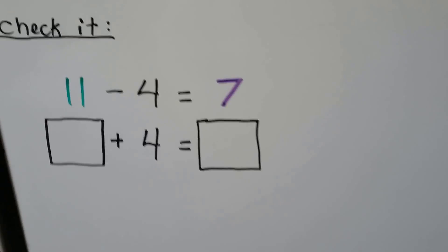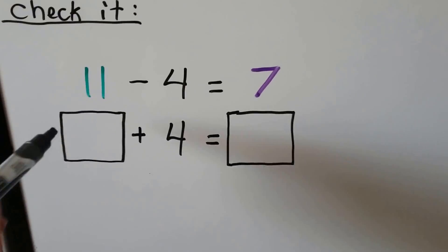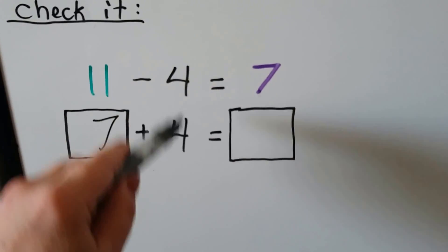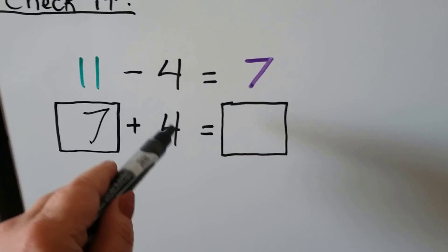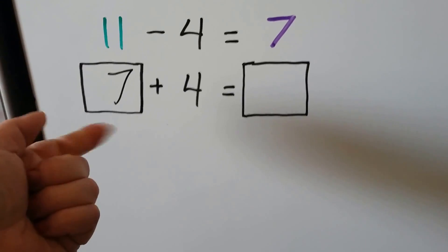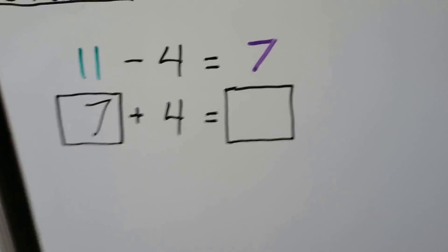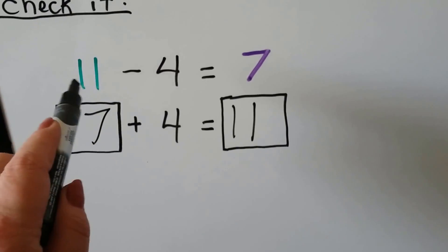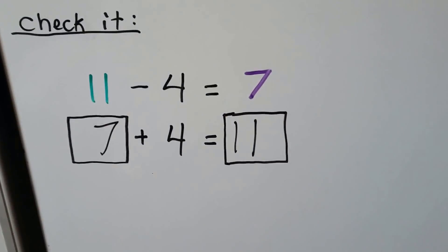Eleven minus four is equal to seven. The difference seven becomes an addend. We use the same number part as before: four. Seven plus four, counting on: seven, eight, nine, ten, eleven. The sum is the same as the minuend, so we know we did our subtraction sentence correctly.